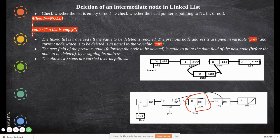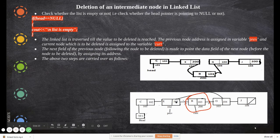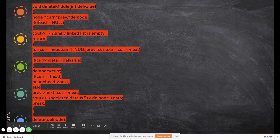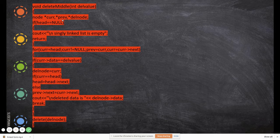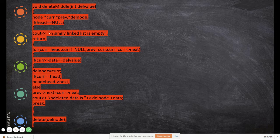Suppose you want to remove node B — that is the value you pass in. We have three pointers: previous, current, and del_node. del_node holds the node being deleted; current and previous track the current position and the node just before it. First, check if the list is empty; if not, enter the for loop.